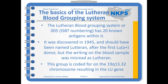The Lutheran blood grouping system, also known as 005, has 20 known antigens. It was originally discovered in 1945 and should have been named Luteran after the first LUA positive donor, but the writing on the blood sample was misread as Lutheran. This is a nice callback to how important it is to have blood transfusion samples written accurately and correctly — we ended up changing the whole name of a blood grouping system because of bad handwriting.